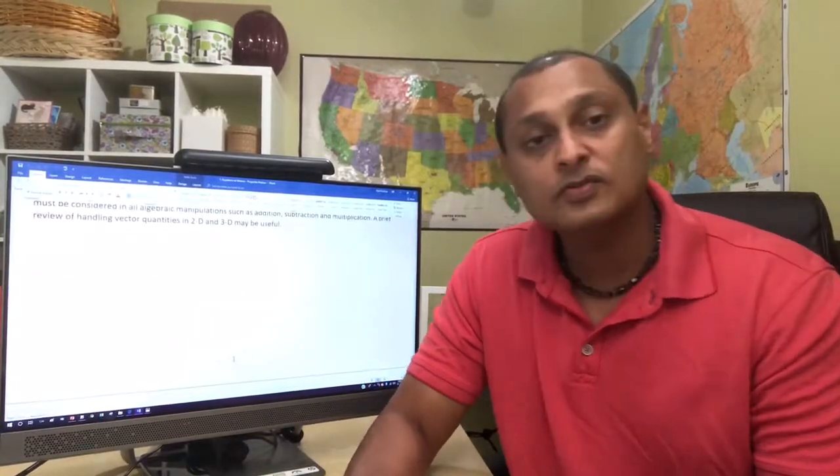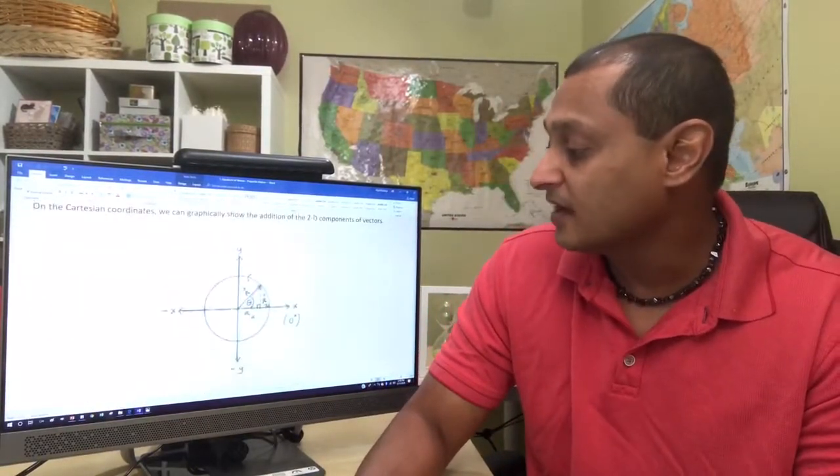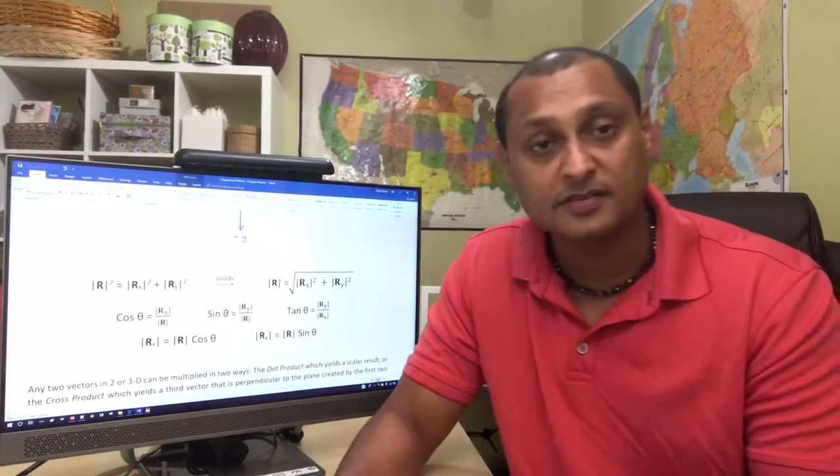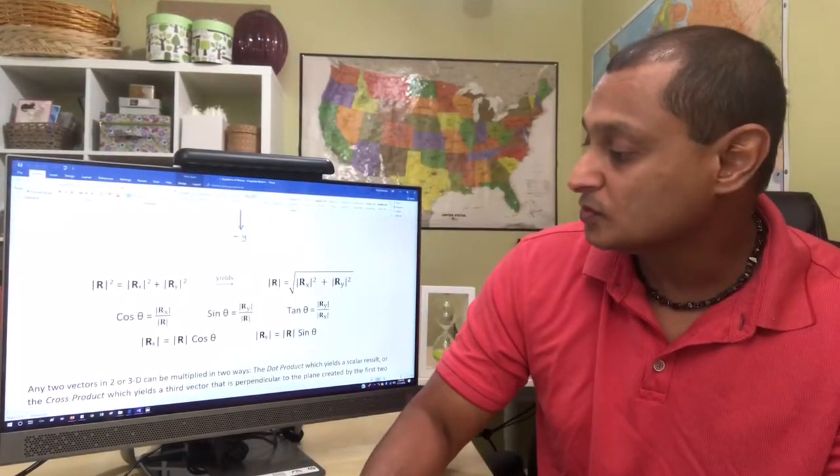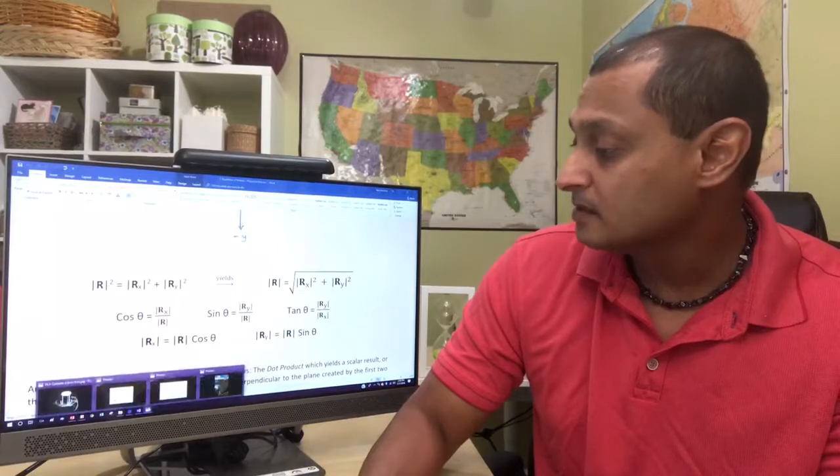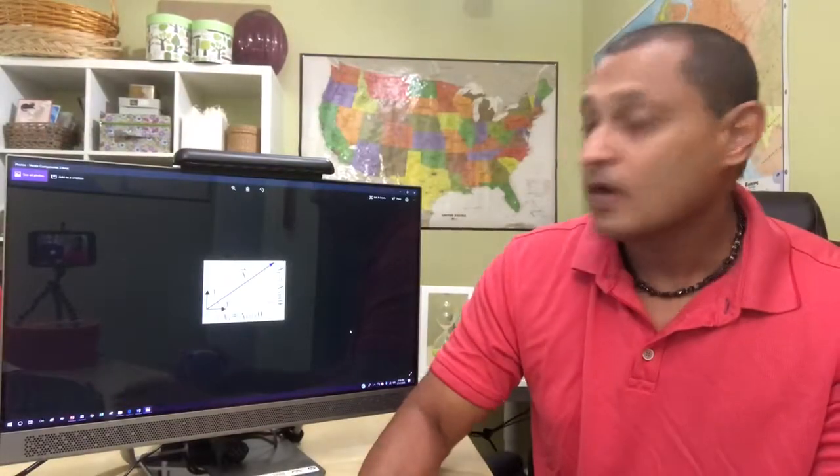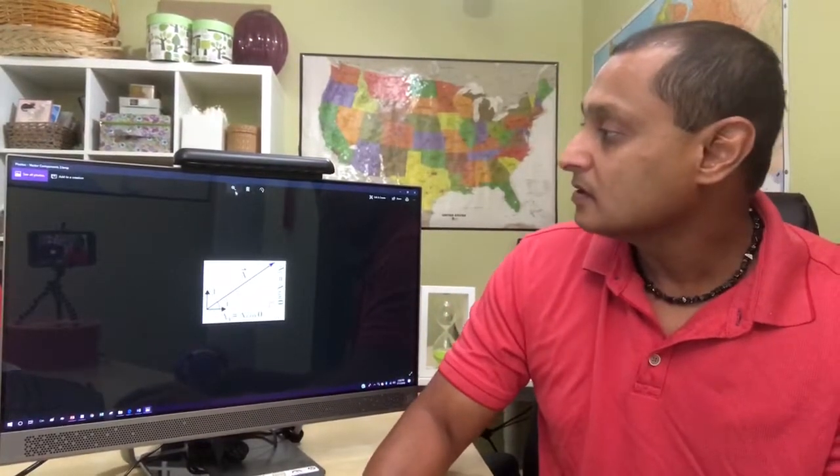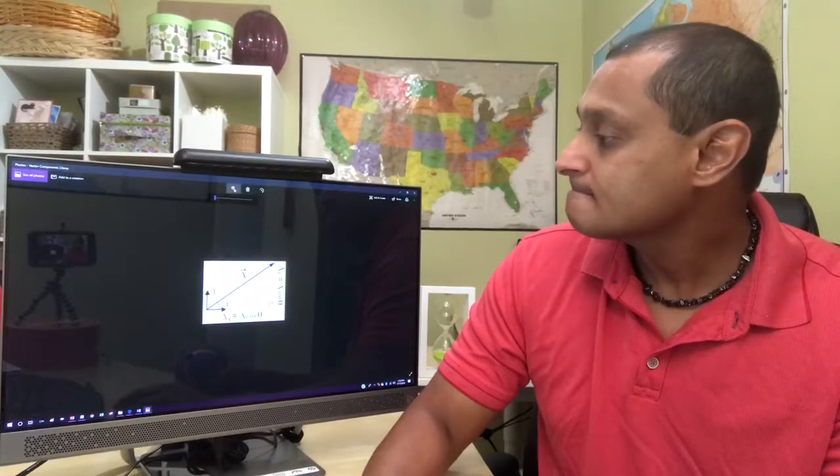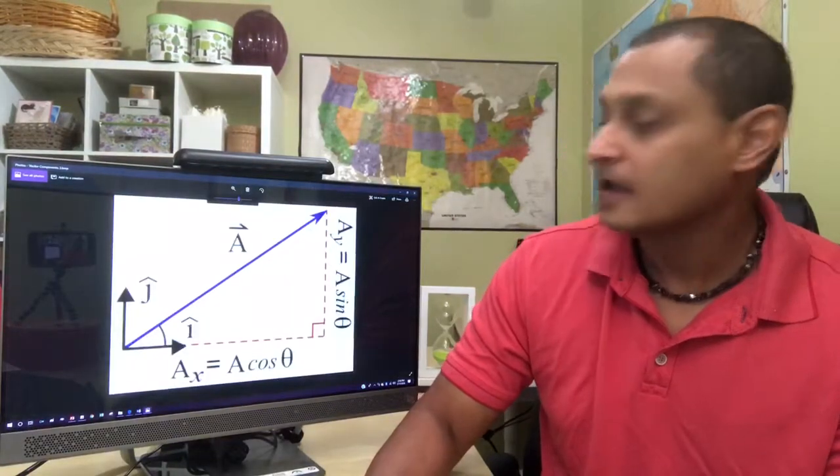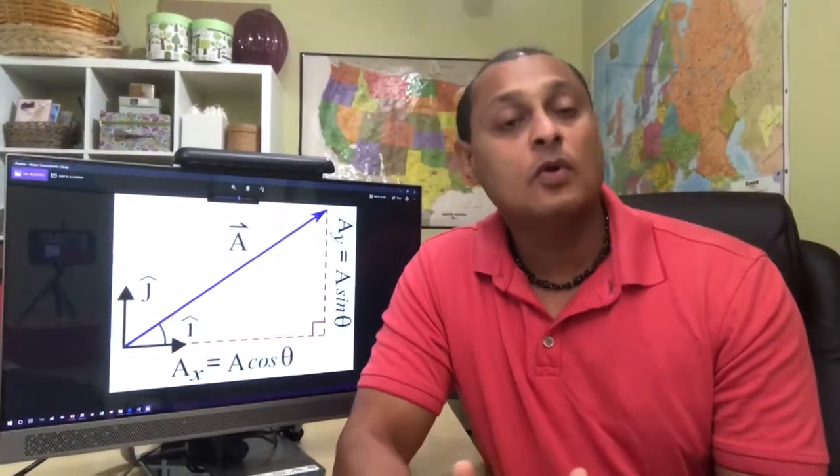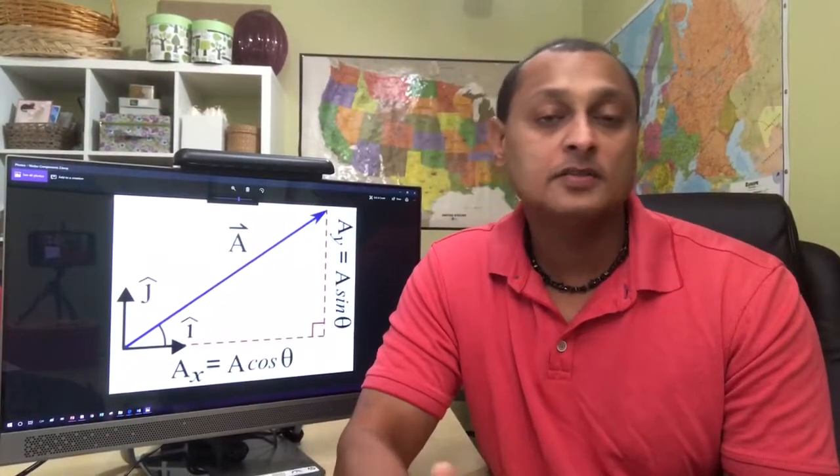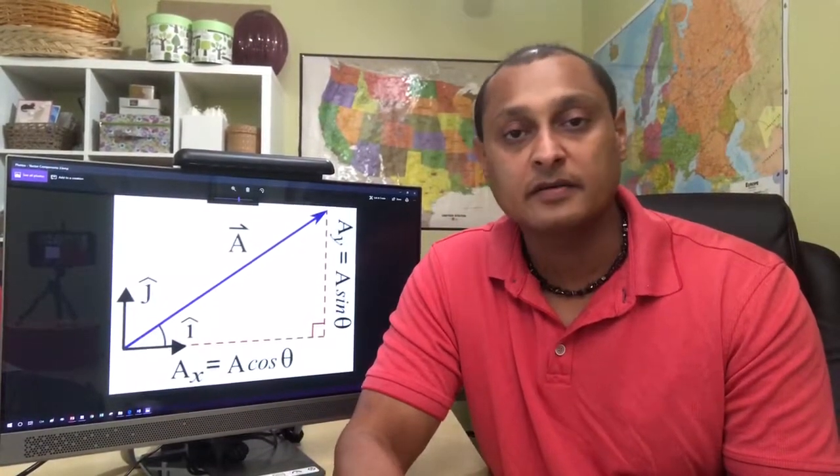So, as we go through this chapter, we're going to define things such as vectors and the components of vectors. Now, to do that, if I were to get a different diagram, take a look at this. So, all physical quantities fall into one of two categories, either a scalar or a vector.